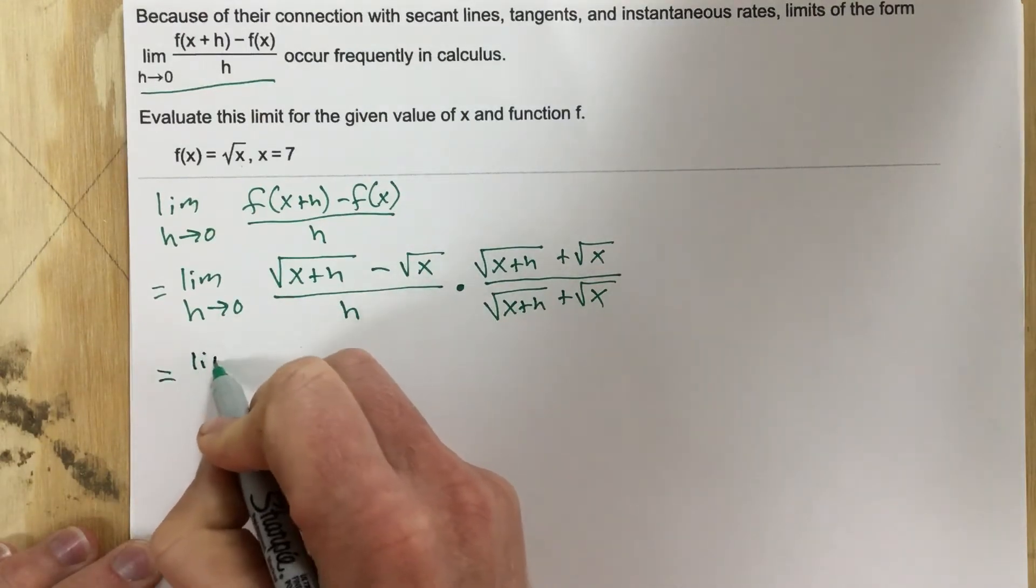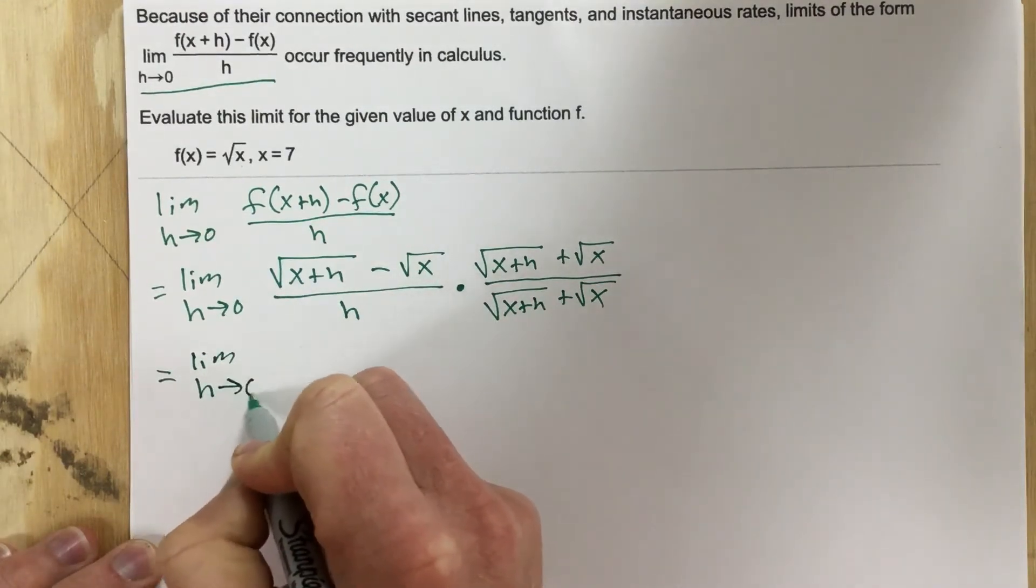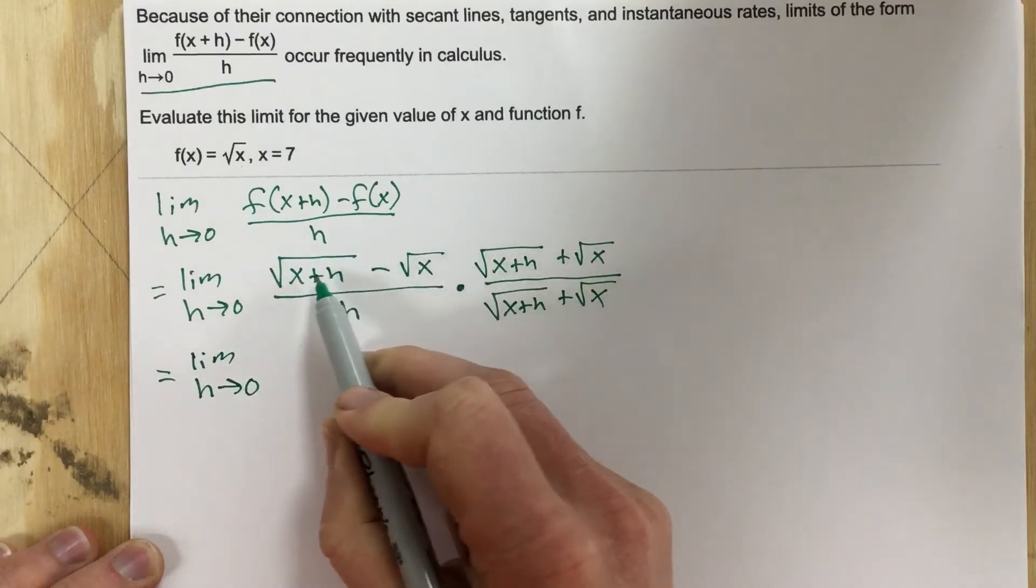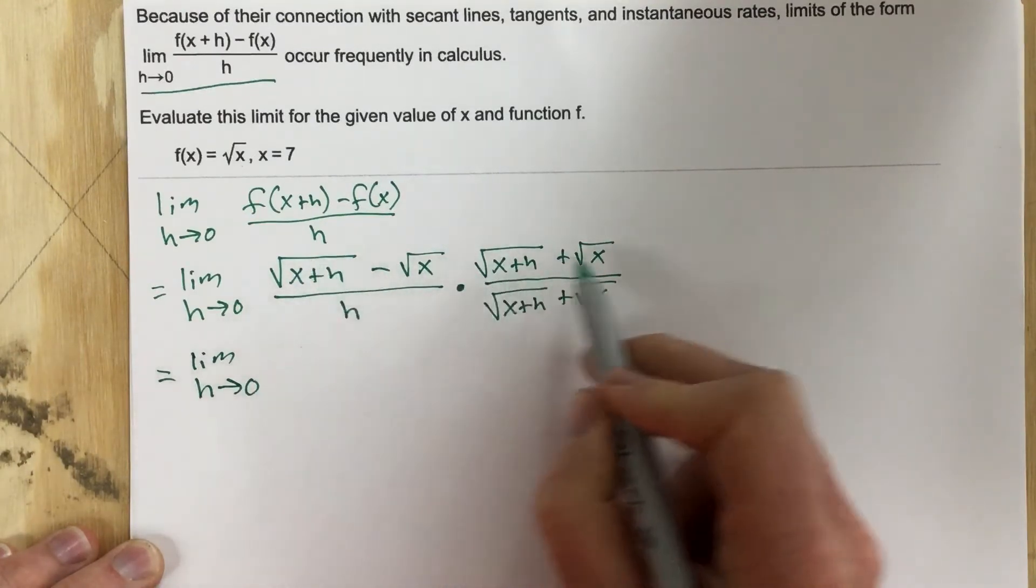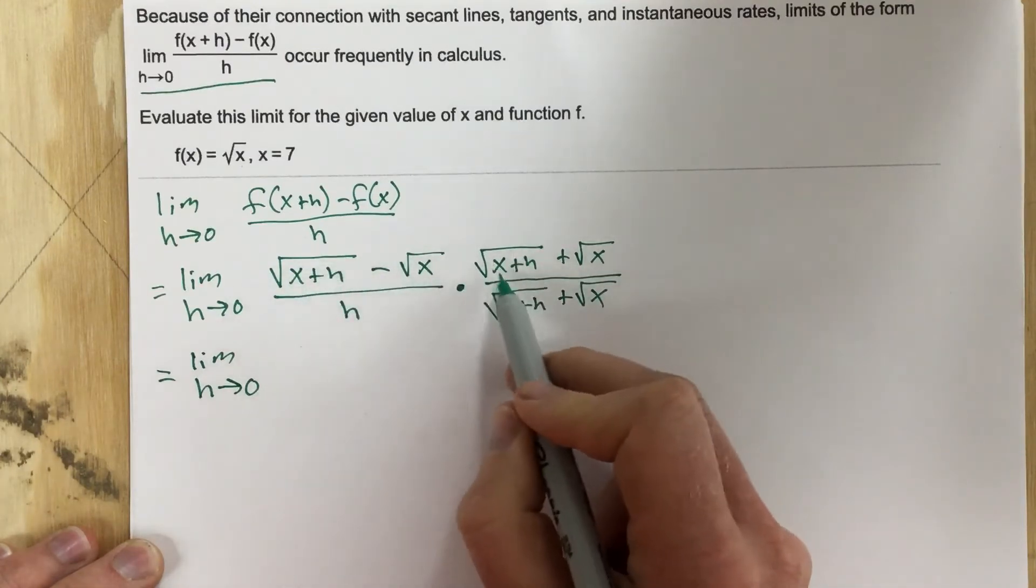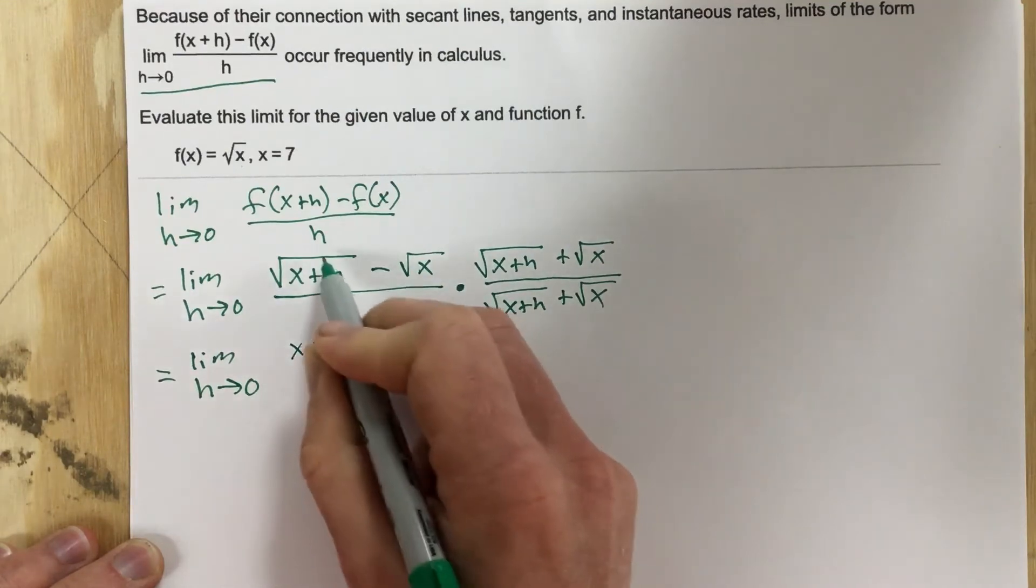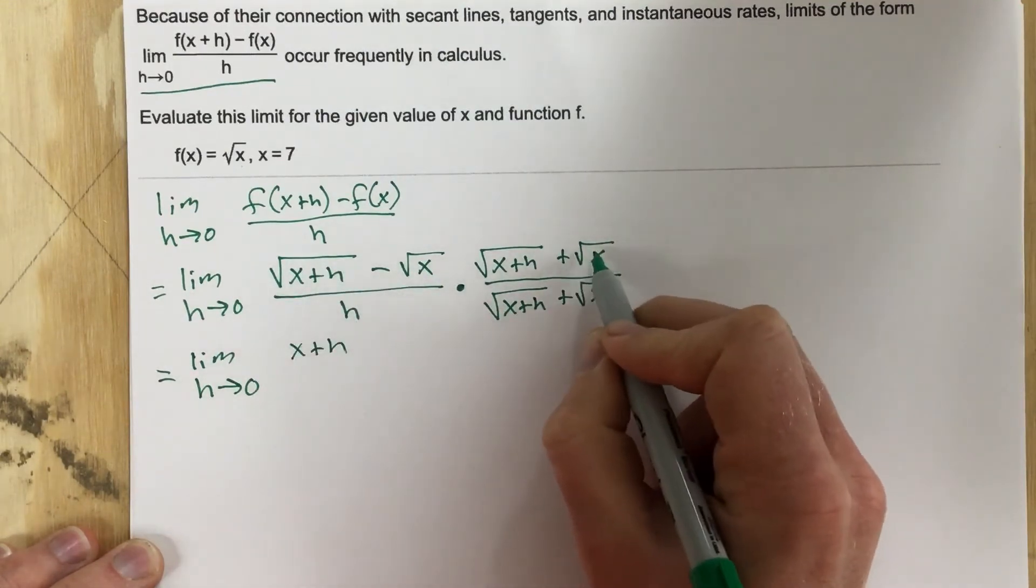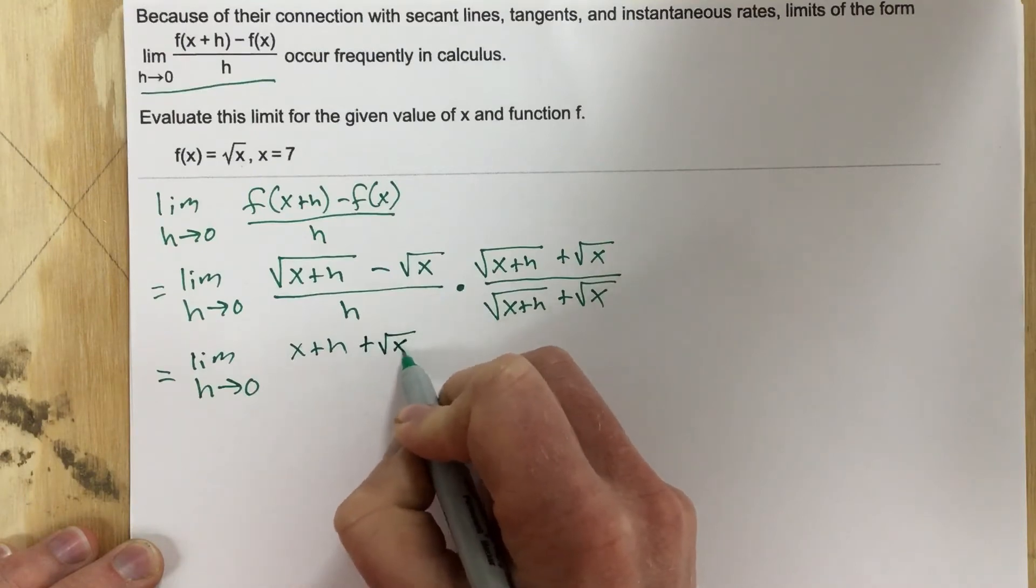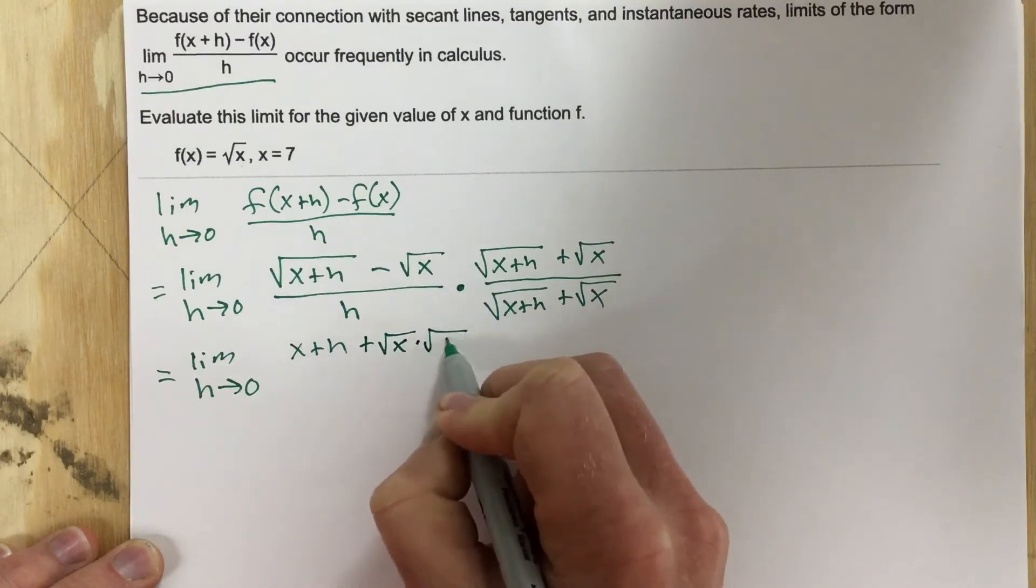I get the limit as h approaches 0, and when I multiply this root times this, I'm going to distribute this one to each term and this one to each term. When I take this times this term, I get x plus h. When I take this times root x, that's going to give me plus root x times root x plus h.